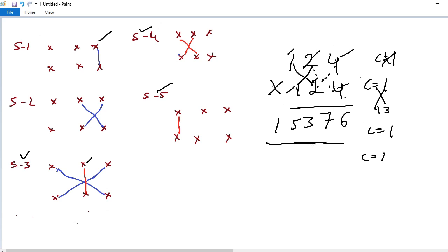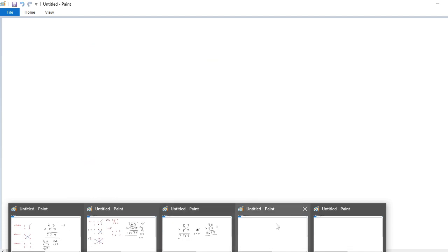So I will give one more example. 512 square. 512 into 512. 2 into 2, 4, first step. Second step, 1 into 2 plus 1 into 2. So 2 plus 2, 4. Third step, 5 into 2, 10. 2 into 5, 10. 10 plus 10, 20 plus 1 into 1, 21. Carry 2.